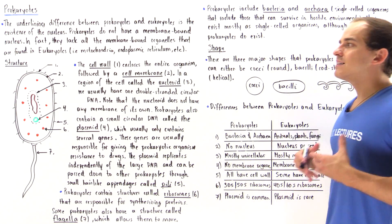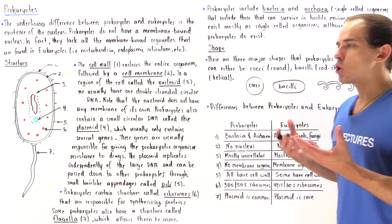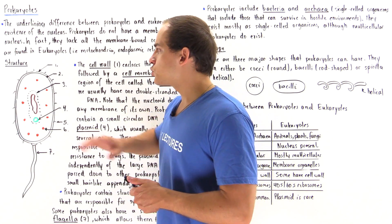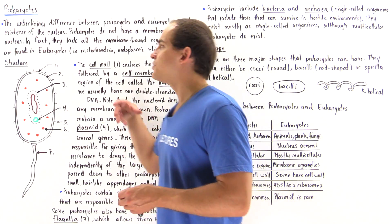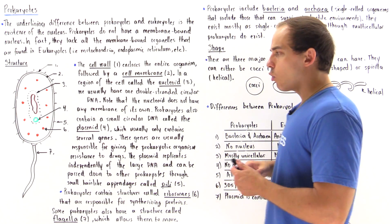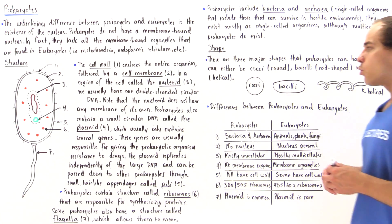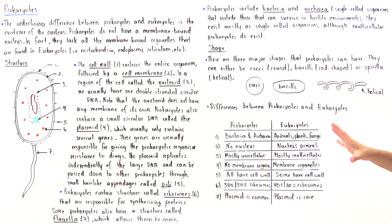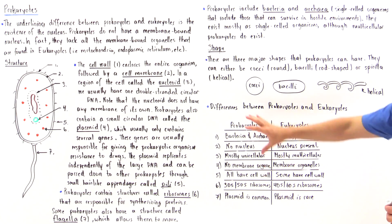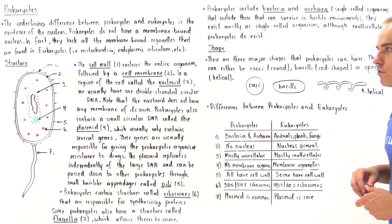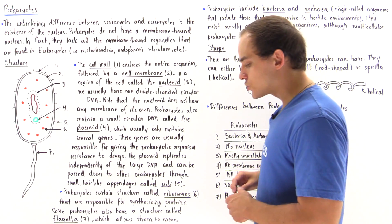So what exactly is the structure of a prokaryotic organism? In this lecture, we're going to briefly discuss the general structure of the prokaryotic organism, examine some of the shapes of prokaryotes, and then briefly discuss the major differences between prokaryotes and eukaryotes. So let's begin with the structure.